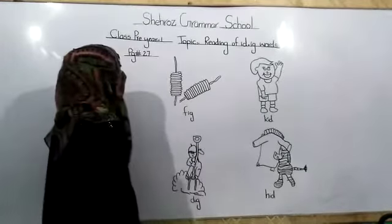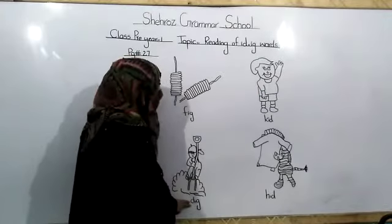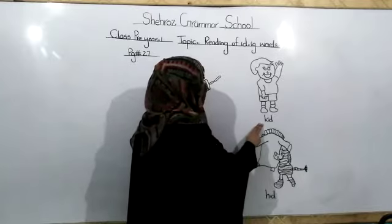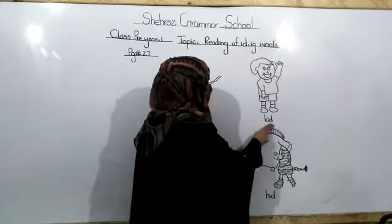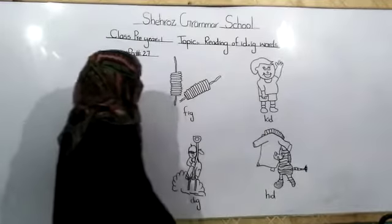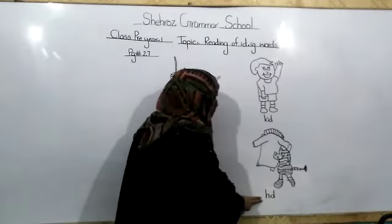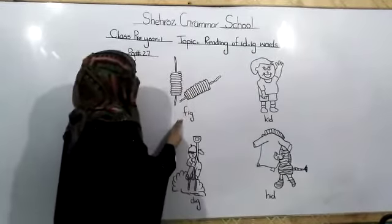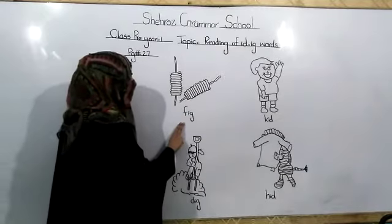Ok children, where is kid? This is kid. No, this is kid. No, this is kid. Very good. What is this? Kid, this is kid. Where is fig? This is fig. No, this is fig. No, this is fig. No, this is fig. Very good. What is this? This is fig.